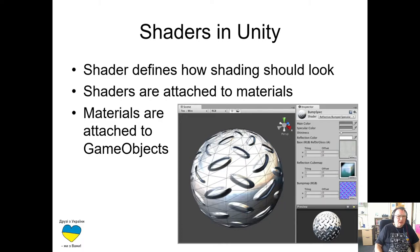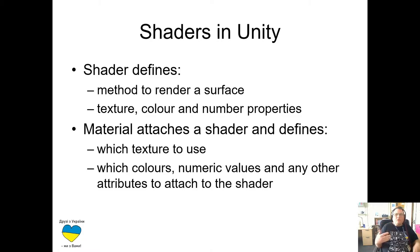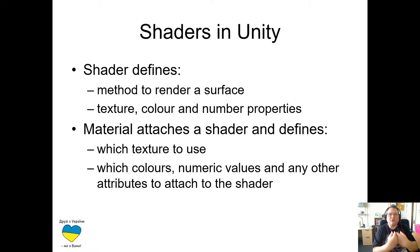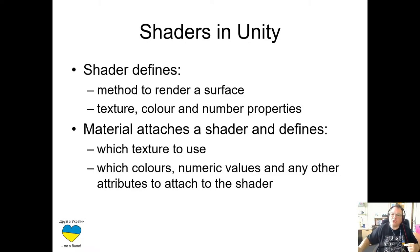You can see an example here in an inspector showing properties of a material, and at the top you can see the name of the shader attached to this particular material. This screenshot has been taken a few years ago, but I will work on live Unity in a few minutes. So shaders are attached to materials, and materials are then attached to game objects. The shader defines first of all the method of how a given surface should be rendered, and also defines what kind of properties — whether texture properties, color properties, or simple number properties — are needed to define how the surface looks.